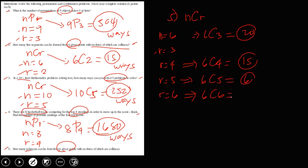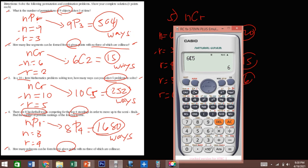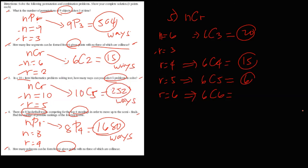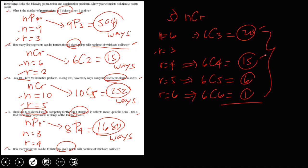For r equals 6, we get 6C6 equals 1 way for a hexagon. Therefore, the total number of polygons is 20 plus 15 equals 35, plus 6 equals 41, plus 1 equals 42. There are 42 polygons that can be formed from 6 given points.